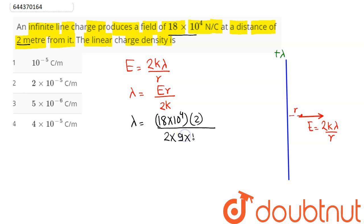k is 9 into 10 raised to power 9. So lambda comes out to be 2 into 10 power minus 5 coulomb per meter.